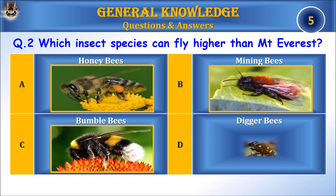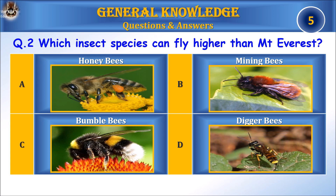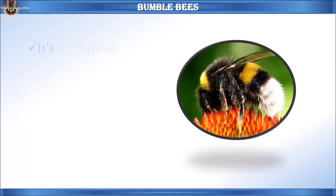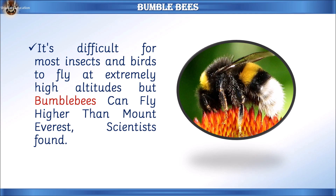Question 2: Which insect species can fly higher than Mount Everest? A) honeybees, B) mining bees, C) bumblebees, or D) digger bees. Answer: C) bumblebees. Let's learn some facts — it's difficult for most insects and birds to fly at extremely high altitudes, but bumblebees can fly higher than Mount Everest. Scientists found this remarkable ability.